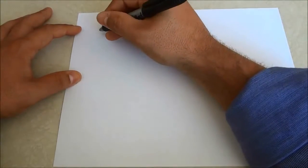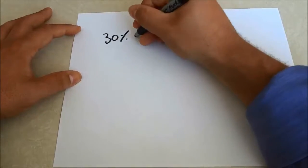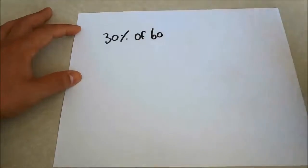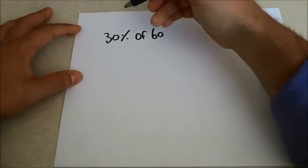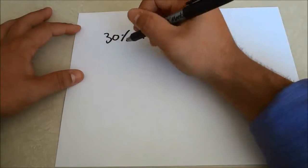Let's just imagine that we wanted to find out what 30% of 60 was. So I would take these two numbers and we are going to use them in multiplication form.